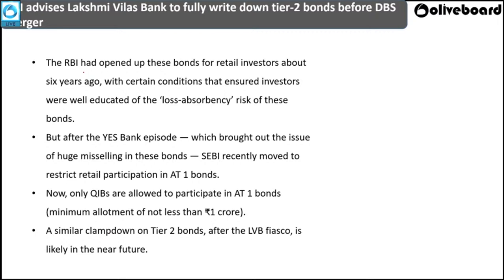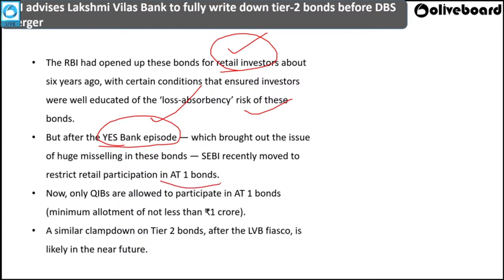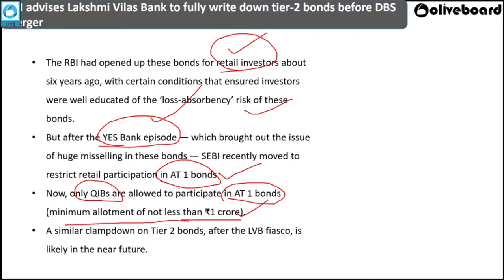RBI had opened Tier 1 and Tier 2 bonds to retail investors about six years ago, with conditions that investors be properly educated about the risks. After the Yes Bank debacle, SEBI restricted retail participation in AT1 bonds — now only Qualified Institutional Buyers (QIBs) can participate, with a minimum allotment size of ₹1 crore. Following LVB's episode, a similar restriction on Tier 2 bond retail participation may also be introduced.